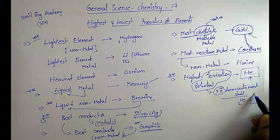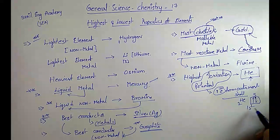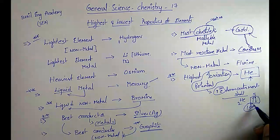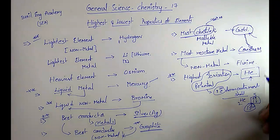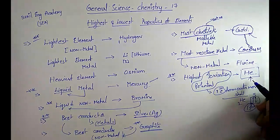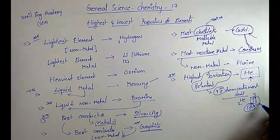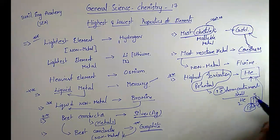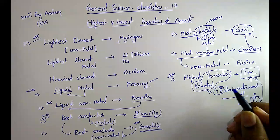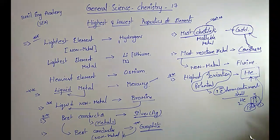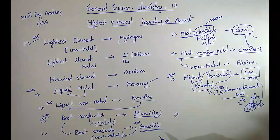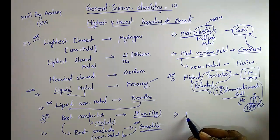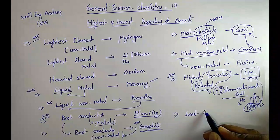The atomic number of helium is 2, so its electron configuration is 1s2 — it is completely filled. Because it is completely filled, it is very difficult to remove one electron from the outermost shell of helium, so helium has the highest ionization potential.